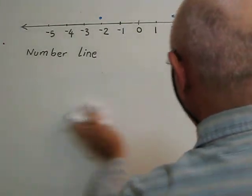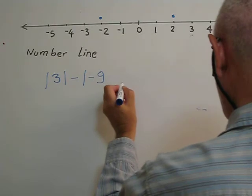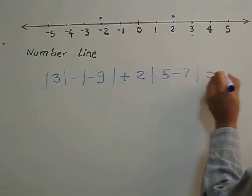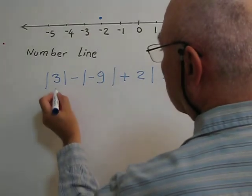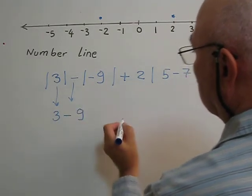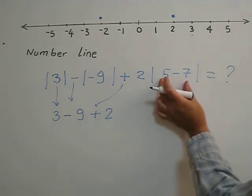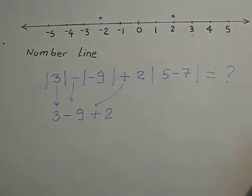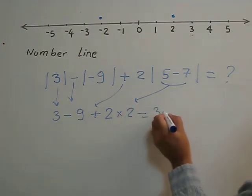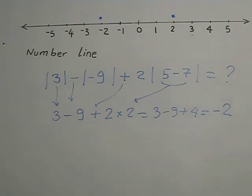Another example: absolute value of 3 minus absolute value of negative 9 plus 2 times absolute value of 5 minus 7. Absolute value of 3 is 3. Absolute value of negative 9 is 9. The 2 and the positive sign are outside the bars. Inside the last bars: 5 minus 7 is negative 2, so absolute value of negative 2 is 2. Working it out: 3 minus 9 plus 2 times 2 equals 3 minus 9 plus 4, which equals negative 2.